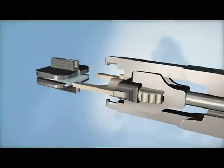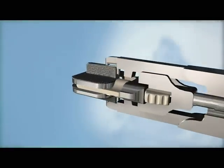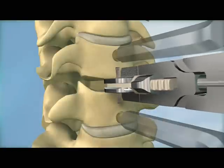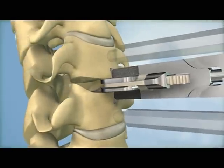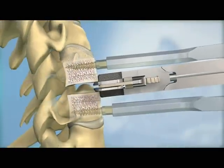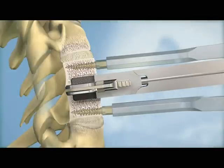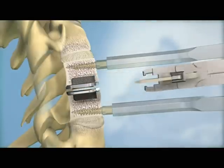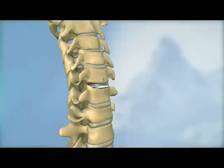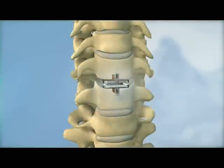After the keel channels have been prepared, the vertebral bodies are ready to be implanted with the ProDisc-C implant. The implant is attached to the inserter, the keels are aligned with the keel channels, and the implant is inserted en bloc into the vertebral bodies. The instruments are removed and the final implant placement is confirmed.